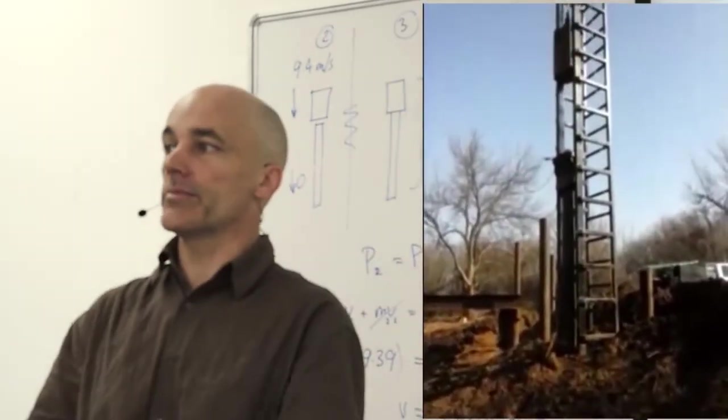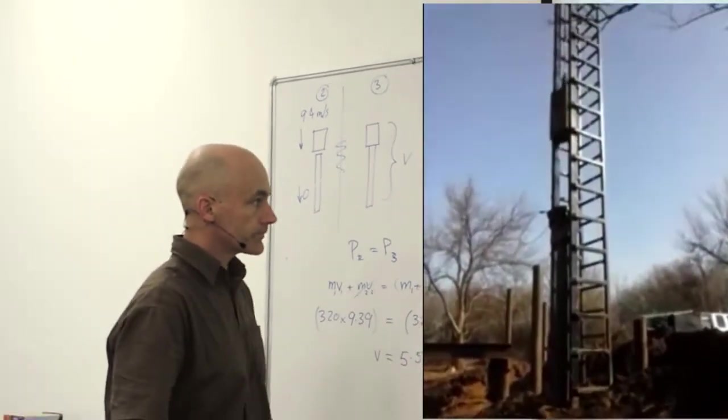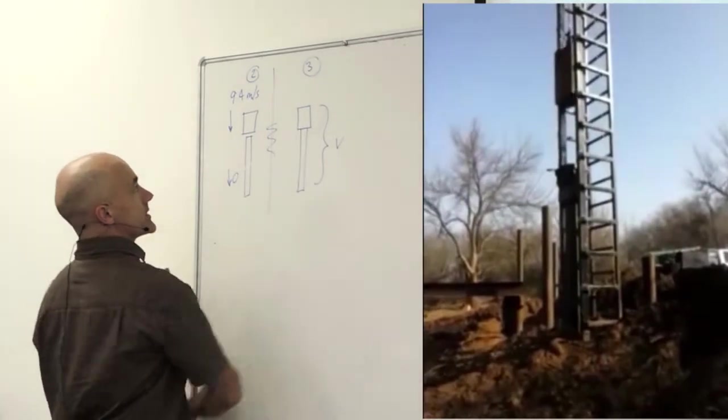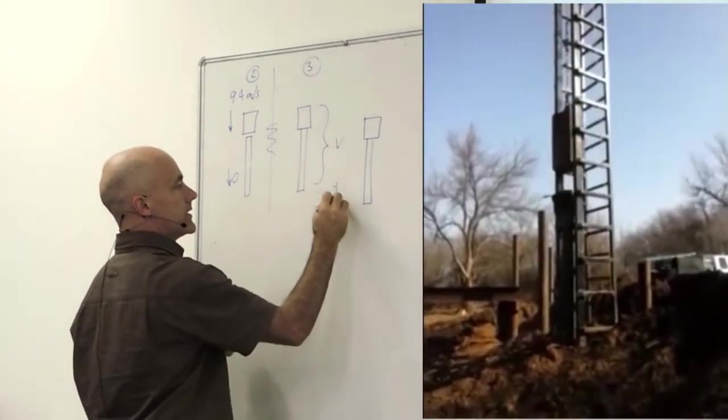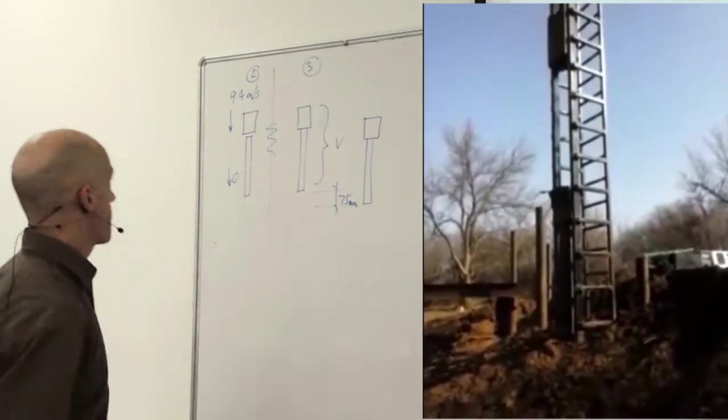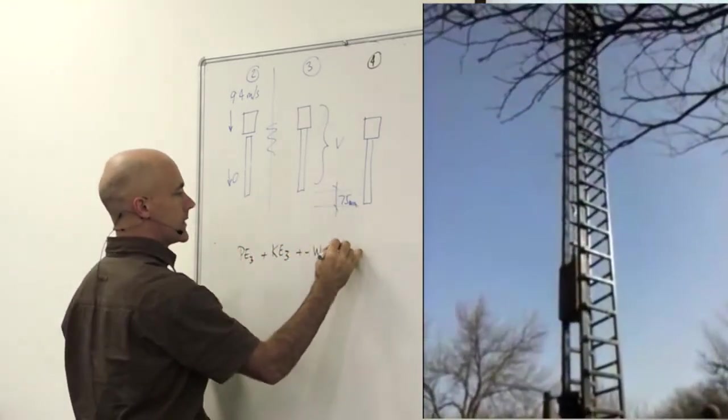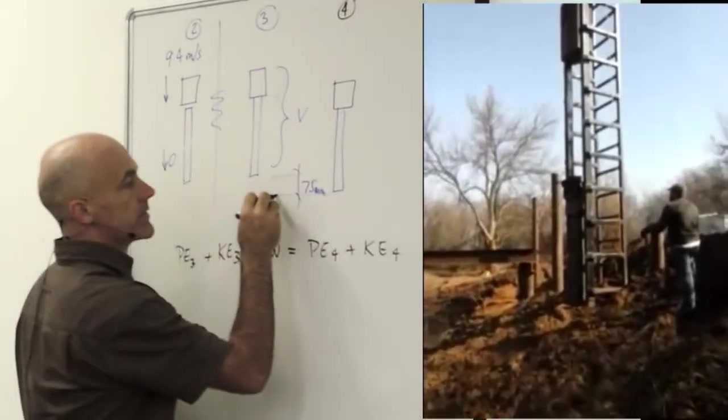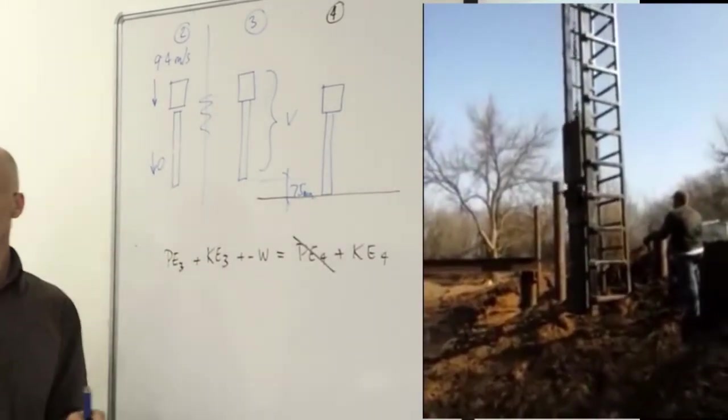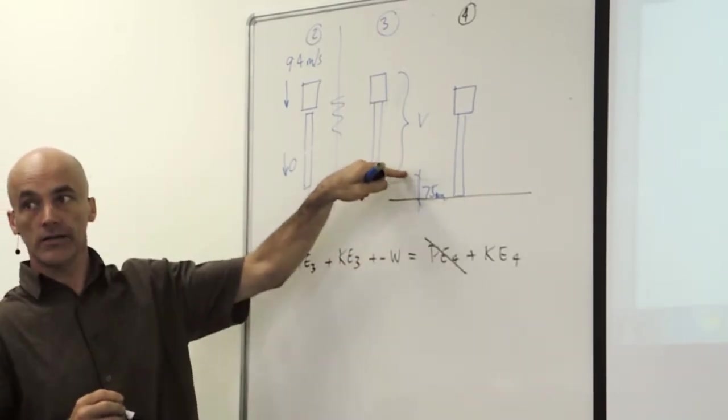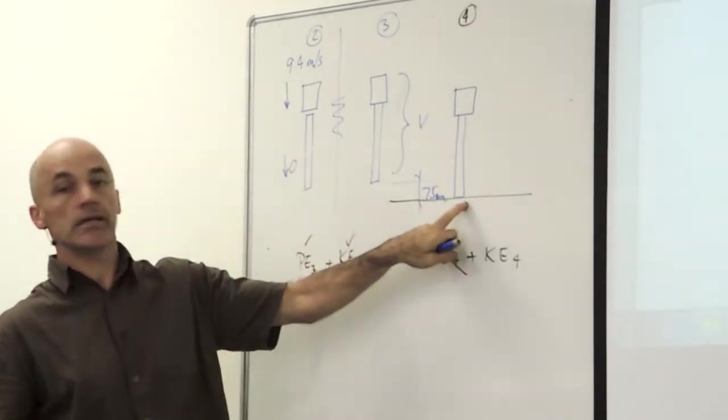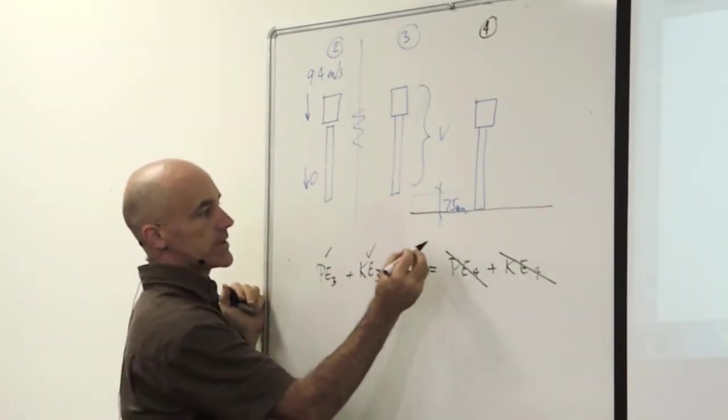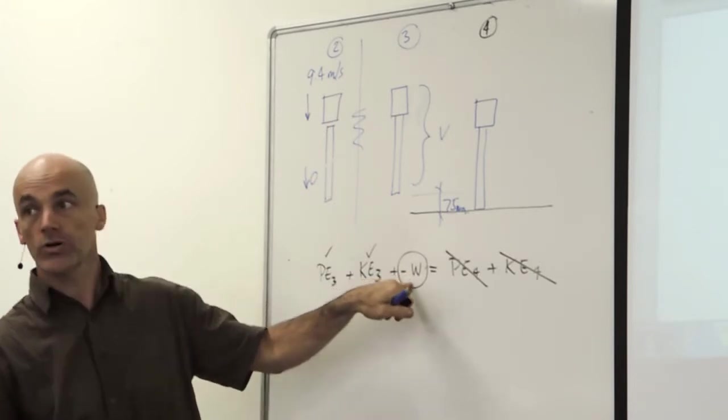If it actually drove the pile 75 millimeters, then we can work out how much resistance the ground must have. We're back to conservation of energy now between step three and step four, moving a distance of 75 millimeters. I don't have any springs, so I'm leaving spring energy out. I need to set up a datum. I'm going to set my datum as the bottom, so that means there's no potential energy at four. I do have potential energy at three because it's 75 millimeters higher. Do I have kinetic energy at three? Yes. Do I have kinetic energy here? No, because it came to a stop. And W is the resistance, that's what I'm trying to find, the amount of work the ground did to stop the pile.